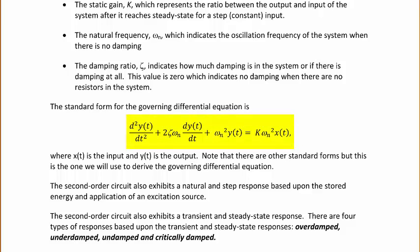The standard form for the governing differential equation is: the second derivative of y, plus 2 zeta omega sub n times the first derivative of y, plus omega sub n squared times y of t, equals K omega sub n squared times x of t, where x of t is the input and y of t is the output. Note there are other standard forms, but this is the one we will use.